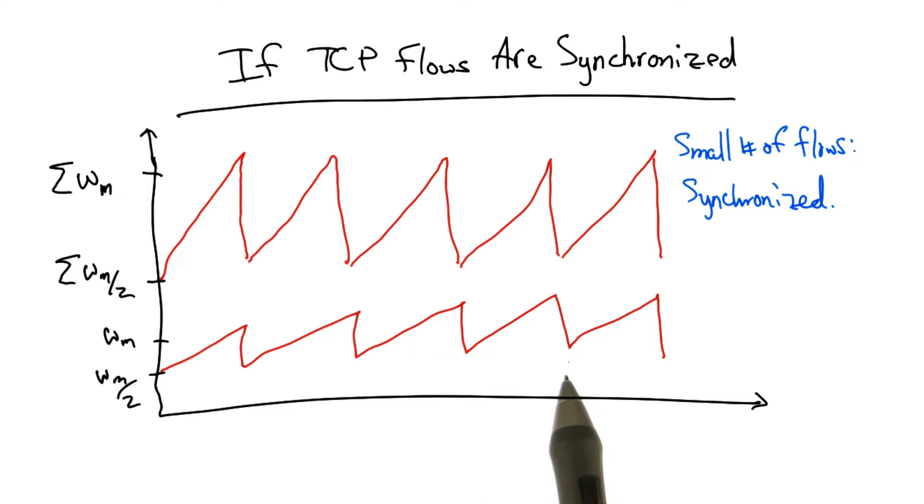Now, if there are only a small number of flows in the network, then these flows may tend to stay synchronized, and the aggregate dynamics might mimic the dynamics of any single flow, as shown.